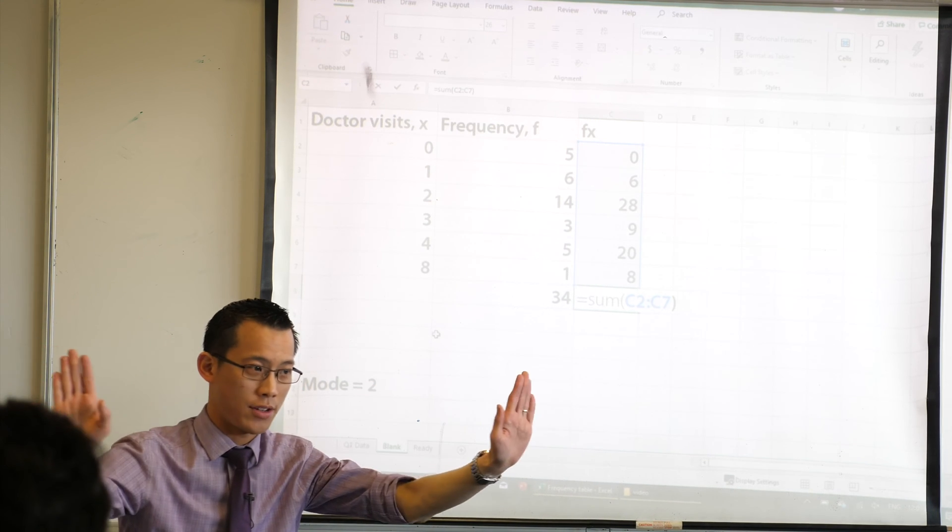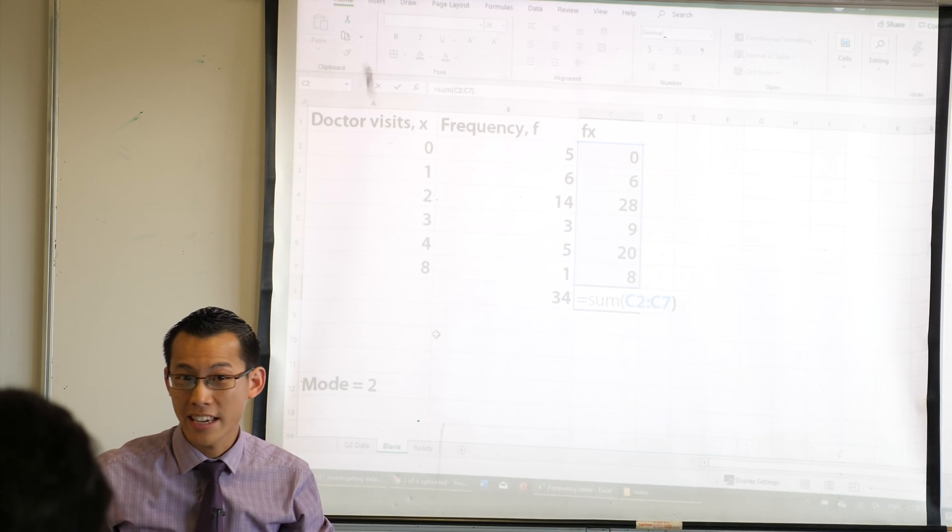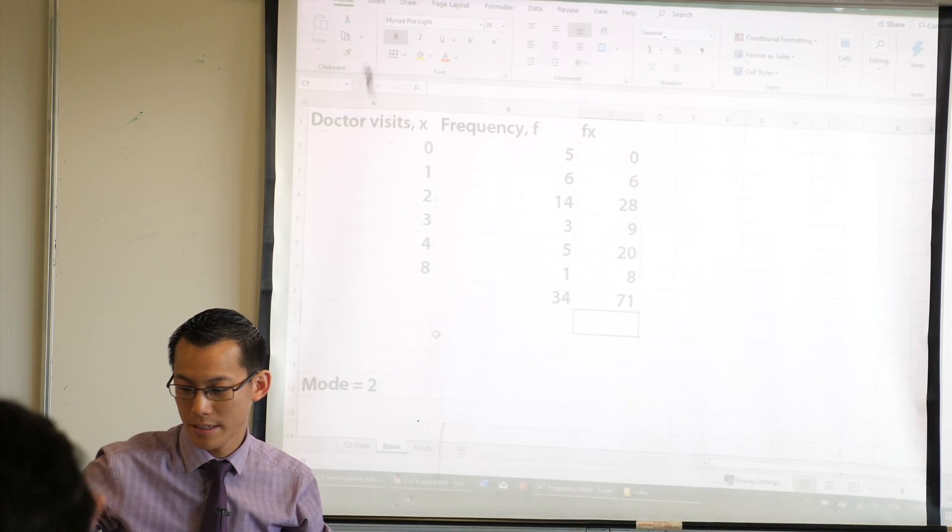That means from c2 all the way to c7. All the way, so it goes up and down. Can I press enter now? Yep. Okay.